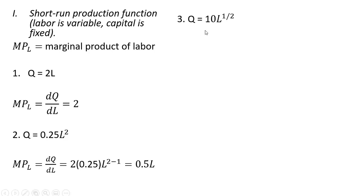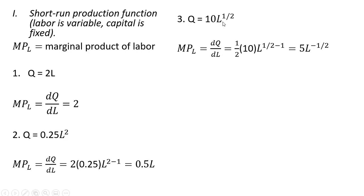Another example. Taking the derivative of this production function, the one-half comes down in front. One-half times 10 is 5. Then we subtract 1 from the exponent: one-half minus 1 leaves us with an exponent of negative one-half. We can follow the rules of exponents by moving L to the negative one-half power down into the denominator.